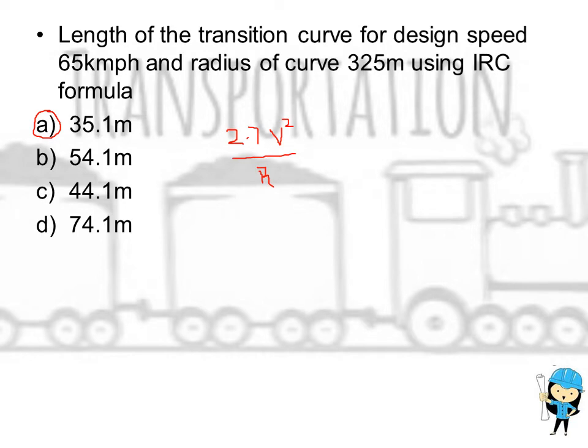Length of the transition curve for design speed of 65 kmph and radius of curve 325 meter using IRC formula. The IRC formula for finding the length of transition curve is 2.7 V squared divided by R, where V is 65 kmph and R is 325 meter. While substituting in this formula we will be getting the length of transition curve as 35.1 meter.